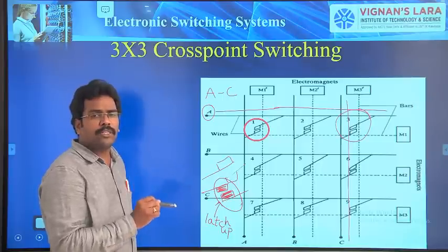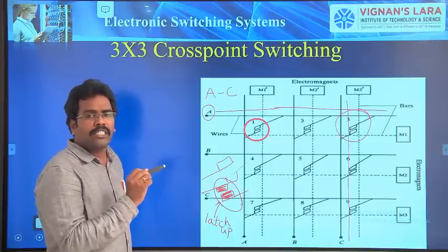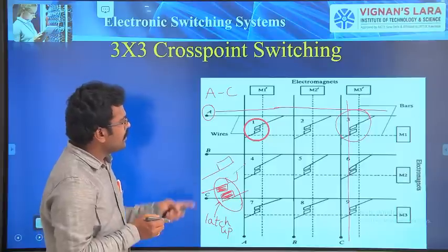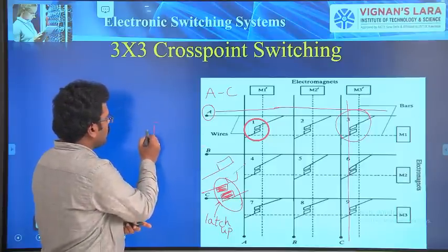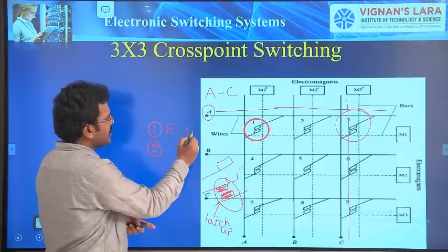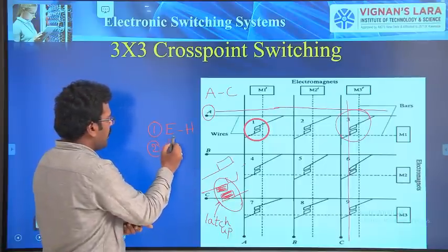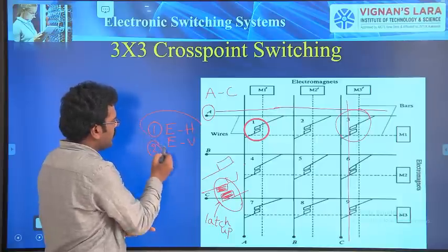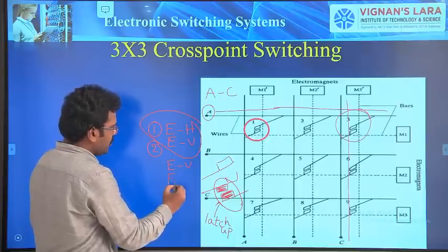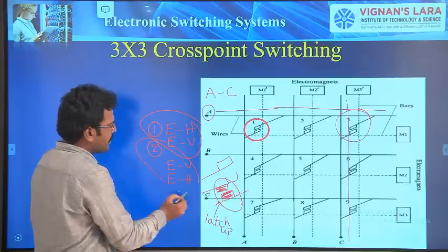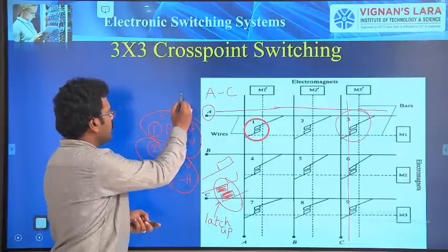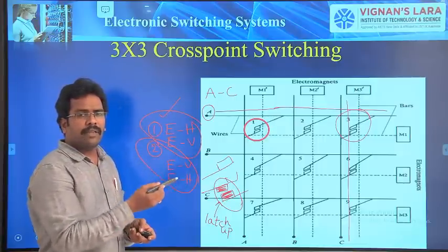I am going to use the word latch-up whenever I want to establish a connection between the calling and called subscriber. You can follow two schemes. Scheme one is: energize horizontal first, then energize vertical. Or, scheme two: energize vertical first, then energize horizontal. You can use either one of the schemes to obtain latch-up. Generally, we will use the first method — energizing the horizontal bars, then energizing the vertical bars.